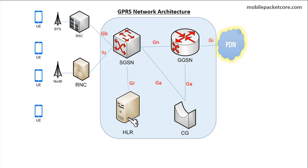The PDN refers to Public Data Network. The PDN is the network the users connect to, whether this network is the Internet or any other network. The GPRS network transfers data transparently between the User Equipment and the Packet Data Network.